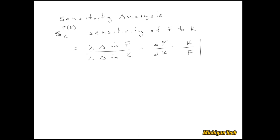Once you have the sensitivity S as a function of k, you let k equal k-zero, some nominal value of that parameter, and then you'll just have a number for S. Then if you change k by some amount — say ten percent — you can quickly calculate how much, as a percentage, f is going to change.